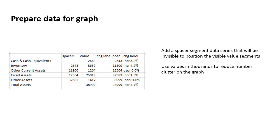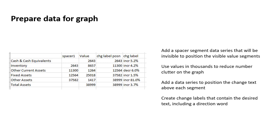The values have been changed into thousands, because otherwise the labels get very long and clutter the graph. We don't need that level of precision when the numbers are so large. The labels for the change are going to be positioned using a data series created for that specific purpose, so we've added another data series to position the labels exactly where we want them.